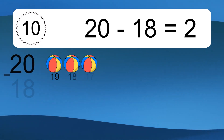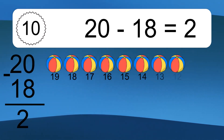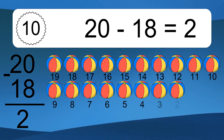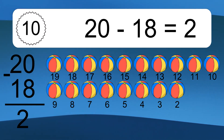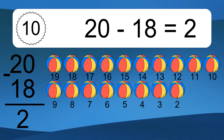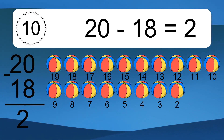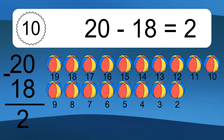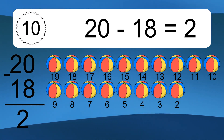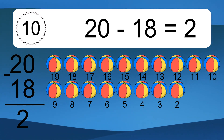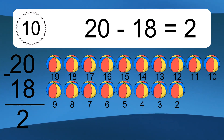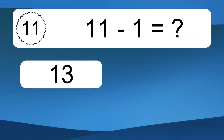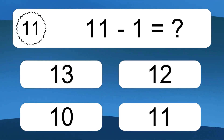20 minus 18 equals what? 20 minus 18 equals 2. Let's count it: 19, 18, 17, 16, 15, 14, 13, 12, 11, 10, 9, 8, 7, 6, 5, 4, 3, 2.